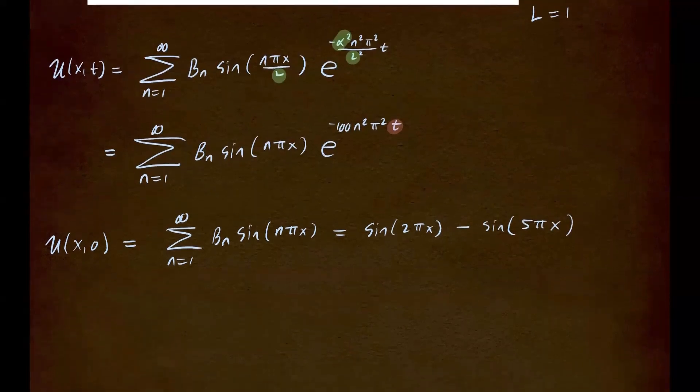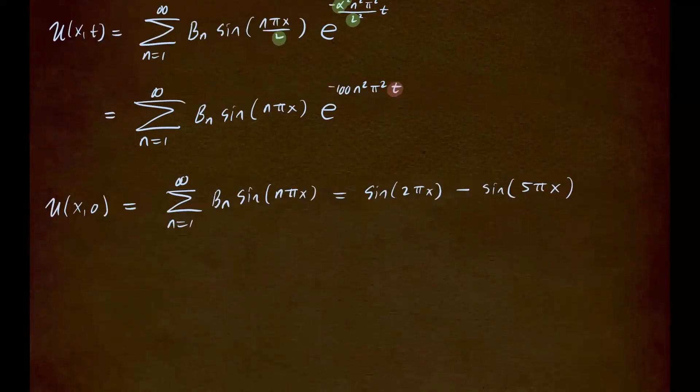So now we don't have to compute bn by using the formula we've seen in class. What we're going to do, we're going to equate the coefficient because sine is its own Fourier series. So here's how we're going to expand the left-hand side.